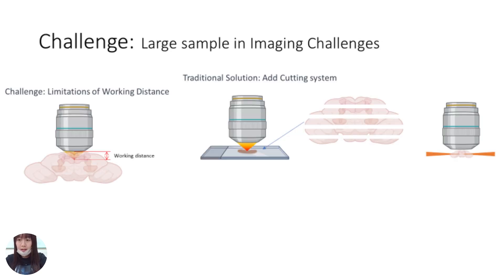Expansion microscopy has introduced the potential for unlimited resolution. However, it poses imaging challenges when dealing with significantly enlarged specimens. The enlargement of sample size leads to decreasing imaging speed, and the working distance of the objective lens limits access to the entire specimen. To address the issue of working distance limitations, a common approach is to use an external counting system in conjunction with the microscope.